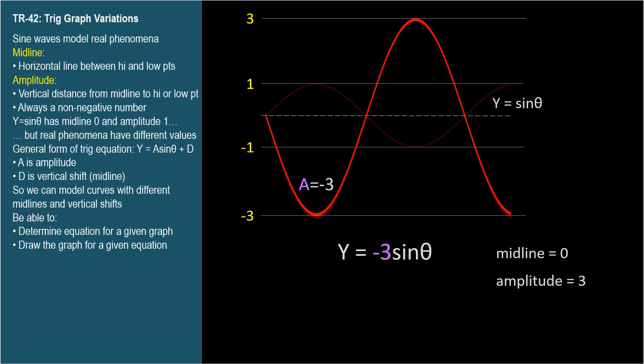When parameter A is negative, the curve flips about the midline. And even though parameter A is negative, the amplitude of the curve is still positive. Amplitudes are never negative. So we can refine our definition of amplitude to be the absolute value of parameter A.